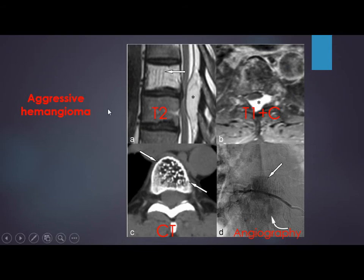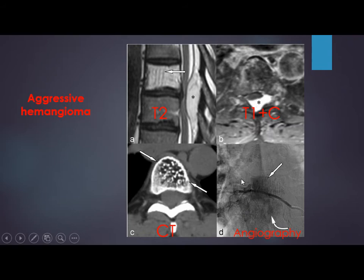Hemangioma could be aggressive. On T2 there is high signal and an epidural component, which enhances on T1 with contrast. On CT, we see the polka dot appearance, and on angiography, the vascular nature of the mass is demonstrated.